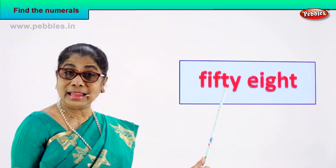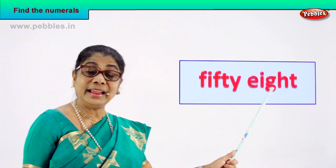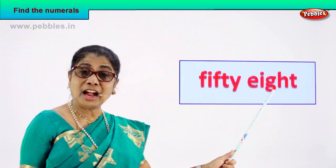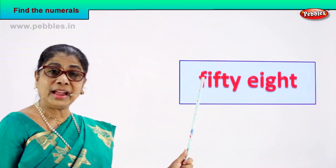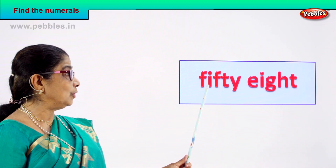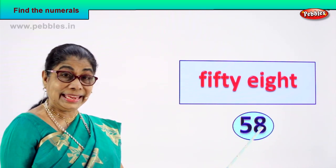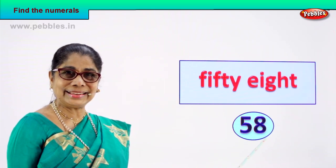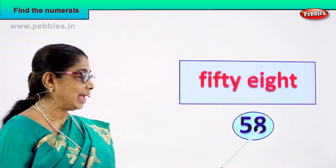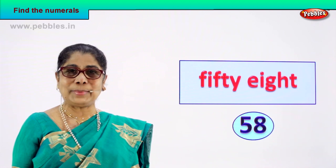Shall we take the next number name? Spell it: F-I-F-T-Y, 50, E-I-G-H-T, 8. That is 58. How do you write 5 and 8? 5 and 8 — 58. What is this? 58. 5 and 8 — 58. Good!